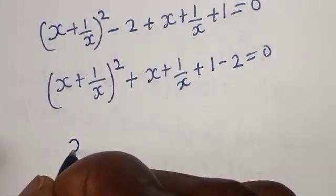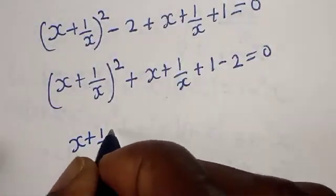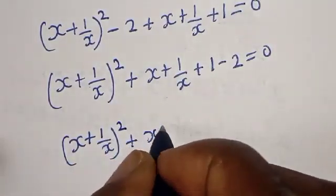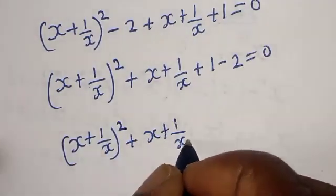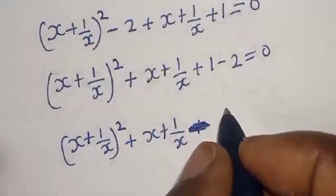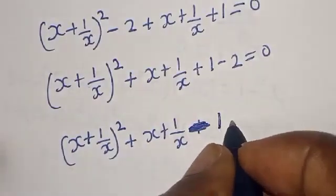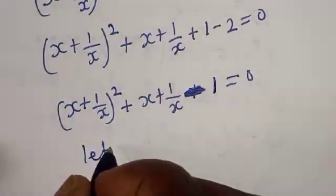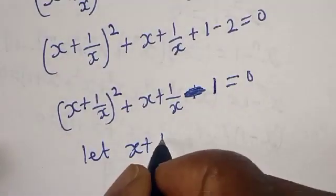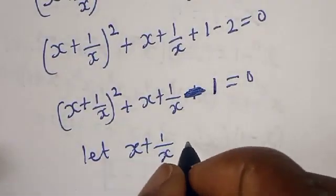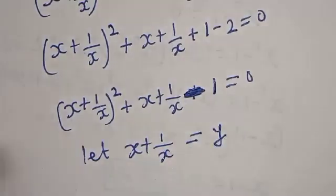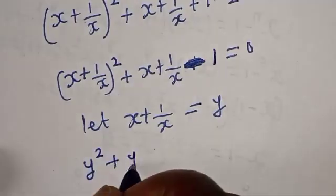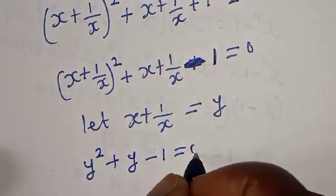Rearranging, we have x plus 1 over x, squared, plus x plus 1 over x, minus 1 equals 0. Let x plus 1 over x equal y, then we have y squared plus y minus 1 equals 0.